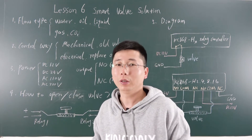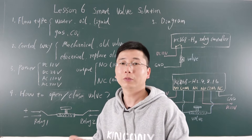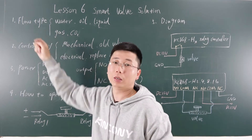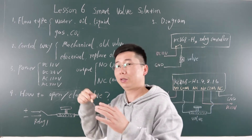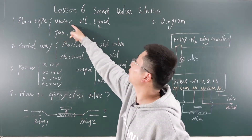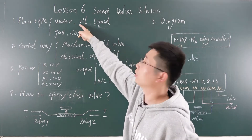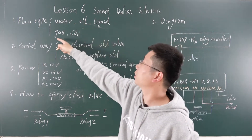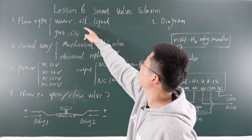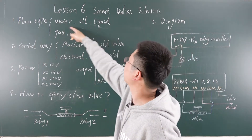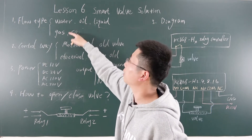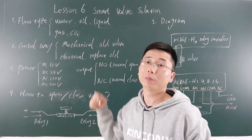Before you design your project about the smart valve, you need to confirm which type of material is flowing in the pipe. Maybe you have water, or you have oil, or maybe you have gas — maybe CO gas — or maybe a liquid. So there are mainly two kinds of material flowing in the pipe.